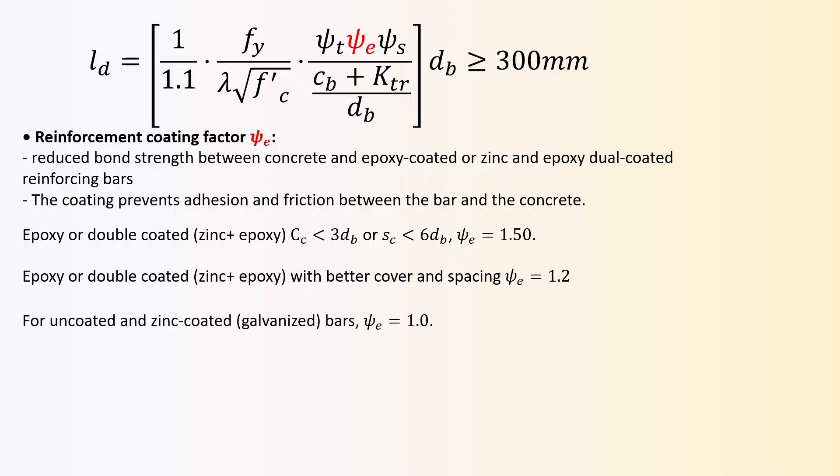Note that the code stipulates that the product of the casting location factor and coating factor need not be greater than 1.7. This limit takes into consideration that the bond of coated bars is already reduced because of the loss of adhesion between the bars and the concrete.